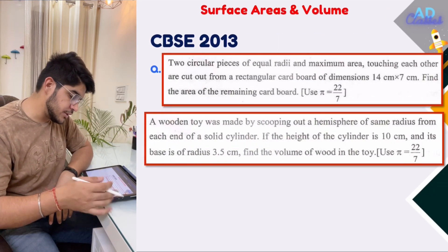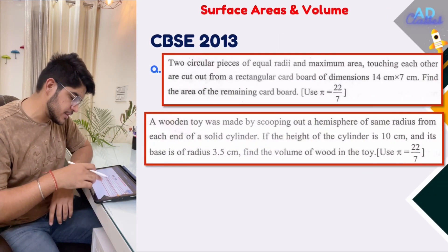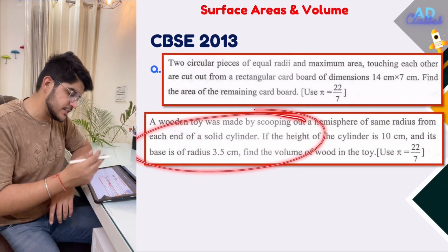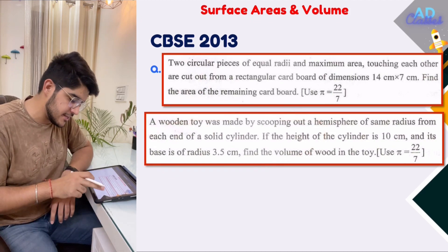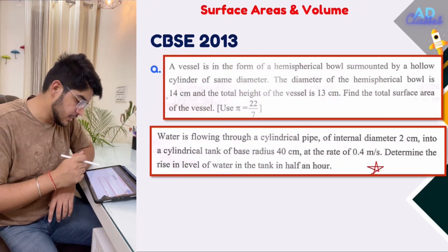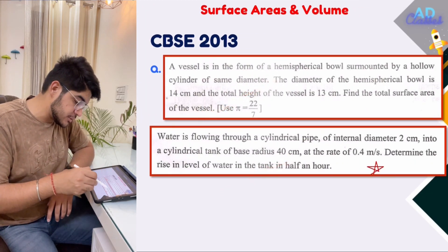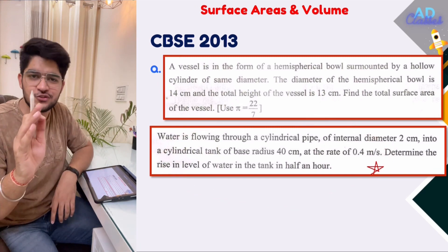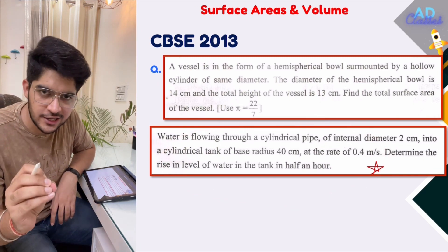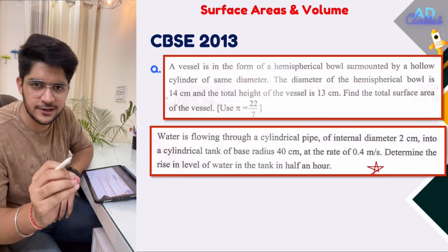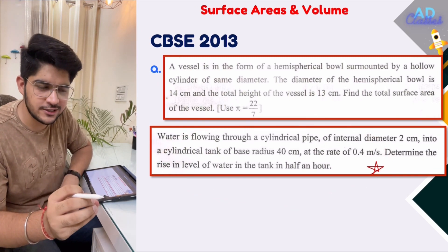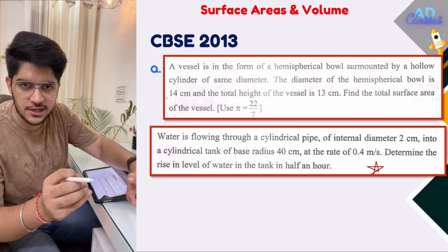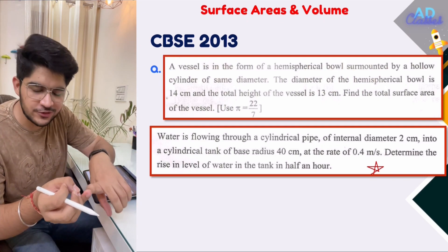Next is 2013 — these are two normal questions, a few of which you will find in NCERT. Then in 2013 there is a question involving rate, time, and speed concepts combined with surface areas and volumes, making it an important series question.